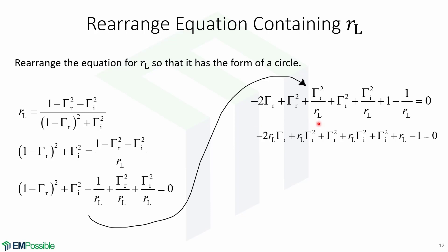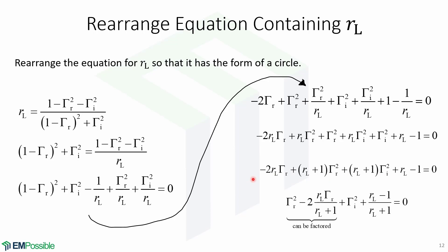We get rid of the square term by multiplying everything and collecting all the terms. Then we get rid of the denominators by multiplying every term by RL. We group common terms with gamma R squared and gamma I squared, and finally we divide every term by RL plus 1.